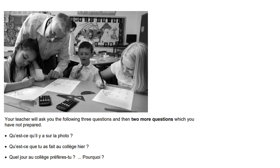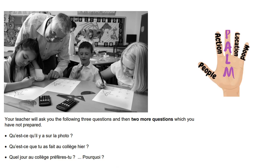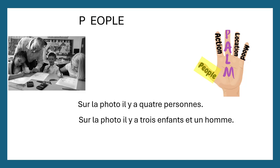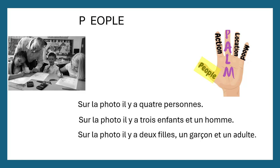We've completed PALM. Let's have a look at another past paper photograph. Again, there are three questions there, but we are going to focus on the first question: 'qu'est-ce qu'il y a sur la photo?' — what is on the photograph? The first thing we're going to describe is the people. We could keep it really vague and just say 'sur la photo il y a quatre personnes' — on the photo there are four people. If you're going to struggle to remember lots of new vocabulary, learn the word 'personne' — it's not going to fail you. You could be more specific: 'sur la photo il y a trois enfants et un homme' — there are three children and one man. Or 'sur la photo il y a deux filles, un garçon et un adulte' — there are two girls, one boy and an adult.